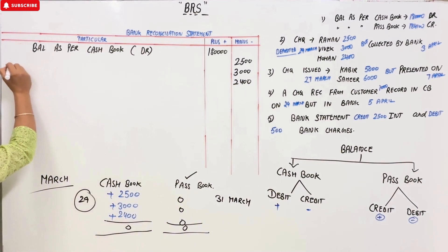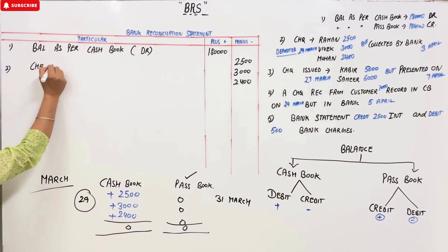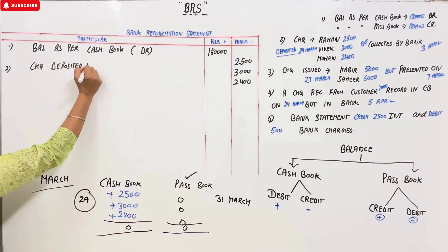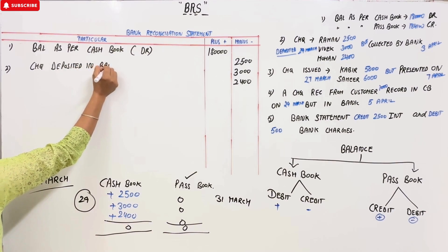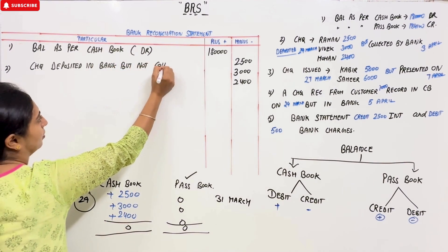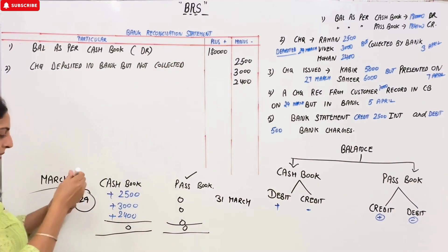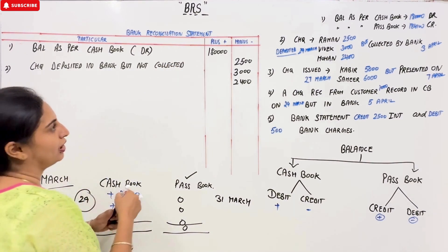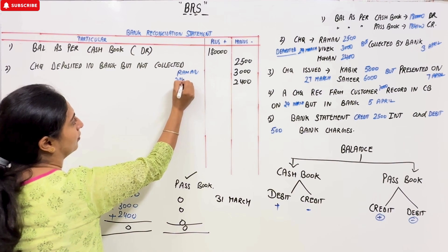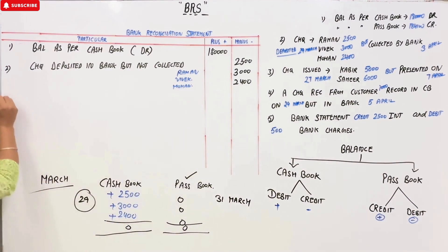In the short form, we will write entry number one and two: Checks deposited in bank but not collected — Raman, Vivek, and Mohan.